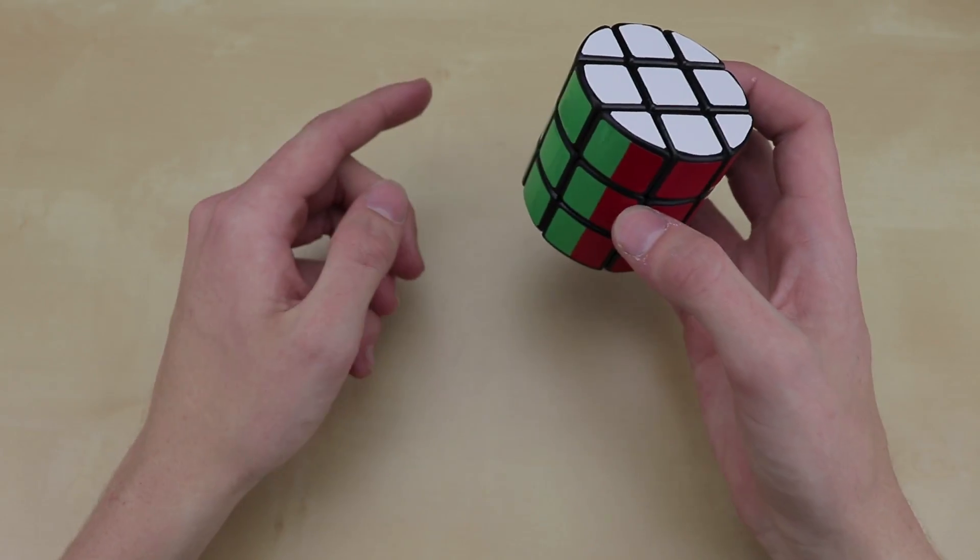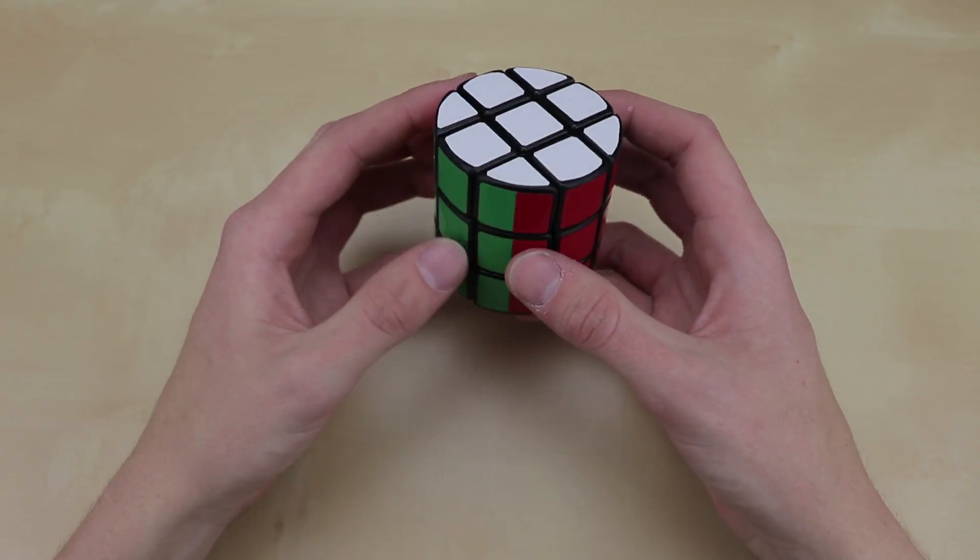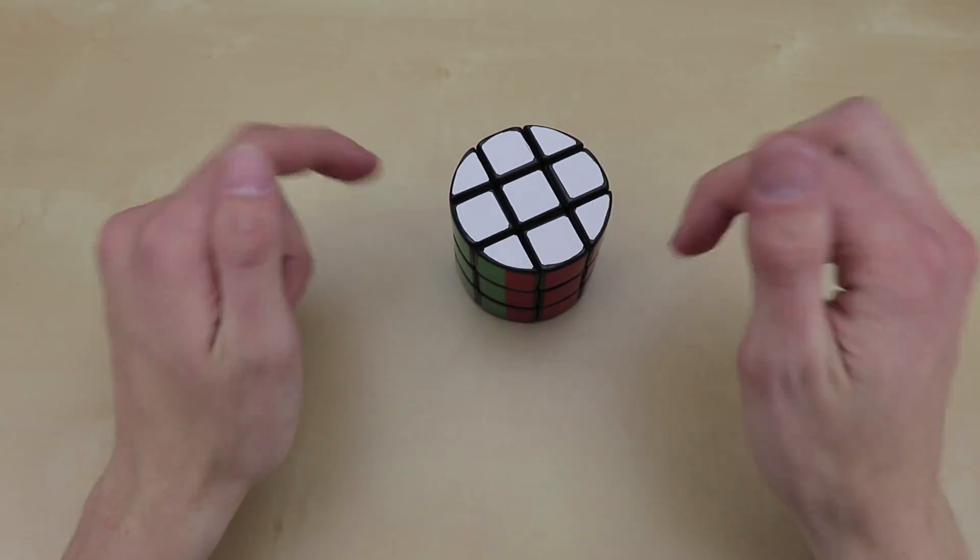Now of course, Pi is 3.1415, etc. It goes on forever, and I've memorized over 100 digits of it, so if you want to see that video, it'll be in the description.